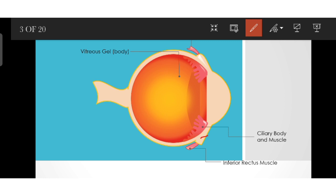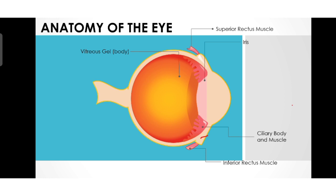Now let's move on to the iris. The iris is the colored portion of the eye. We can see in different people that some have grey eyes, blue eyes, black eyes, or green eyes. It is formed by circular and radially arranged smooth muscle fibers. The iris regulates the amount of light that enters the eye by constricting or dilating the pupil, controlling how much light reaches the retina.